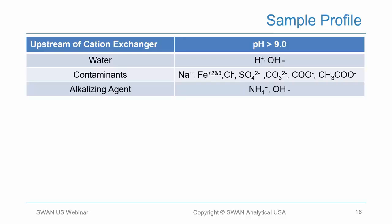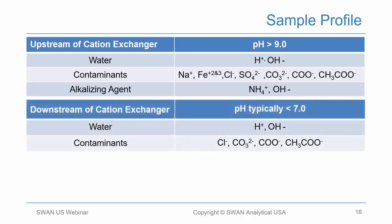Looking at the sample profile as it transitions through the cation exchanger: your incoming sample contains water, various contaminants, and your alkalizing chemistry fed for pH control — in this case, ammonium hydroxide. The incoming sample is typically at a pH value greater than 9. It flows through the cation exchanger and then the sample pH is typically less than 7. The cation exchanger removes the cations, so you are left with anions such as chloride, carbonate, formate, and acetate.